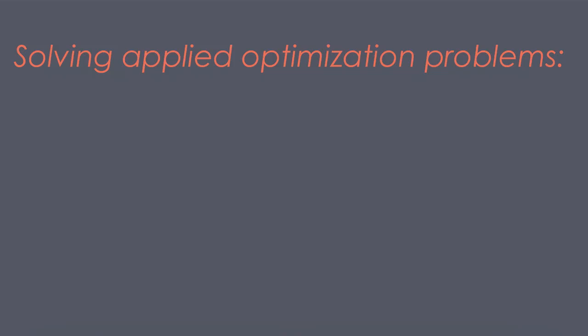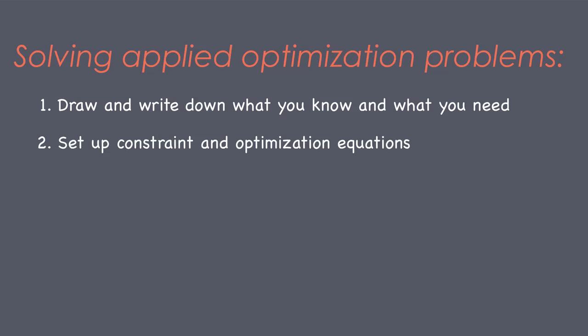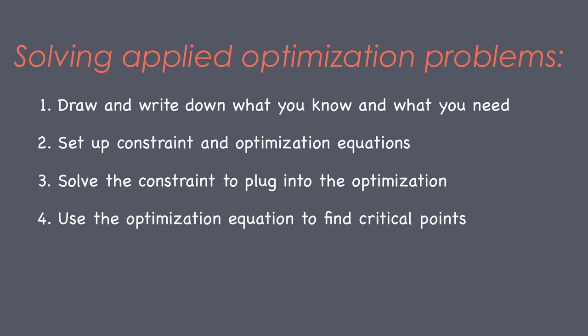Generally, the steps you'll follow to solve an applied optimization problem are: 1. Write down everything you've been given and exactly what you need to find. 2. Set up your equations, one for the constraint and the other to optimize. 3. Solve the constraint equation for one of the variables so that you can plug it into the optimization equation. 4. After plugging into the optimization equation from the constraint equation, take the derivative of the optimization equation to find your critical point. Keep in mind that there may be a second critical point that you have to eliminate. 5. Finally, make sure to answer the question you were really asked. You can use the first or second derivative test to double-check yourself and ensure that you minimized or maximized appropriately.